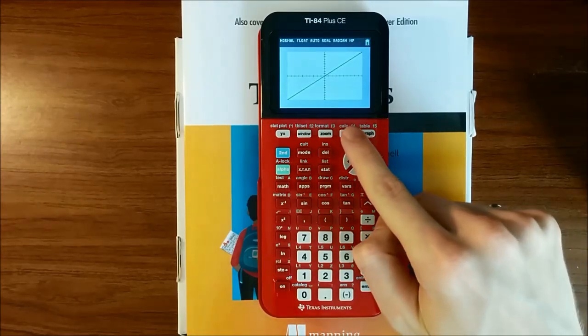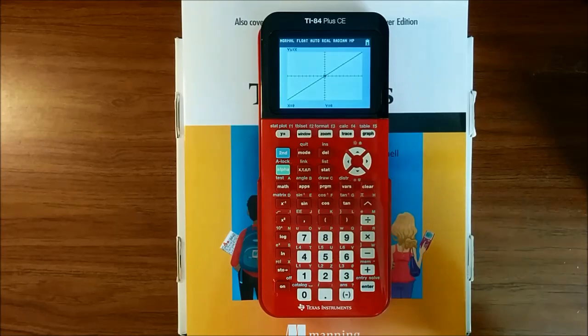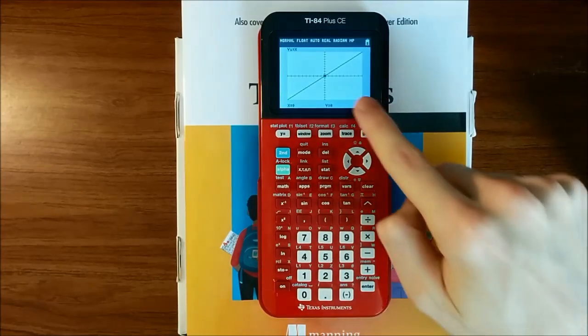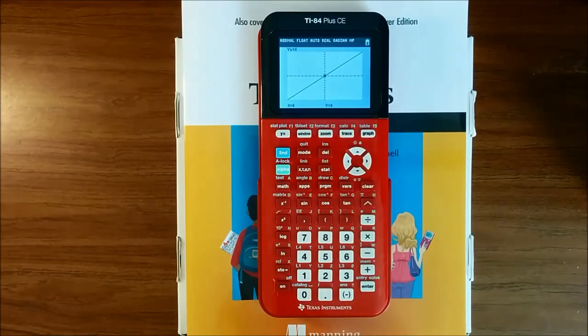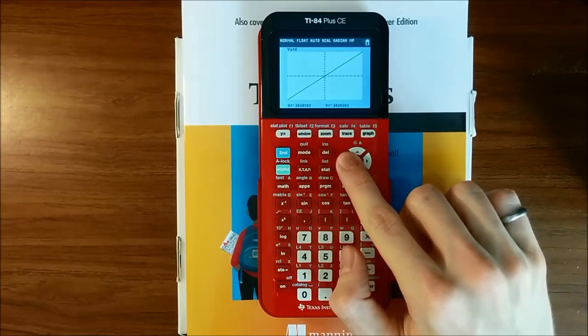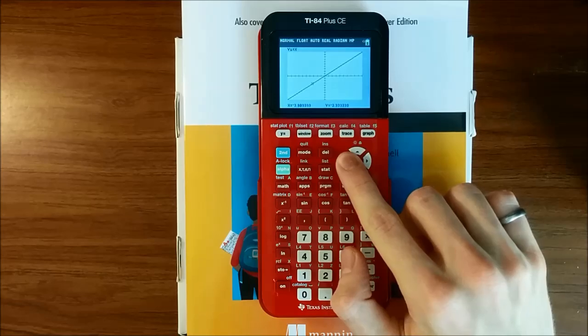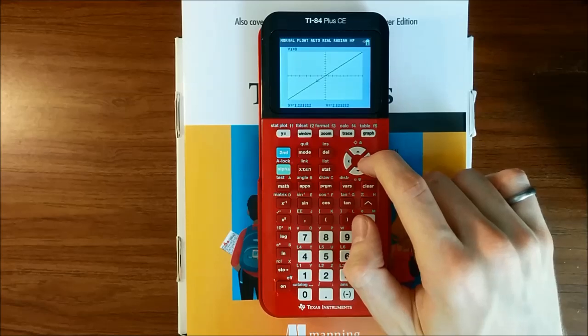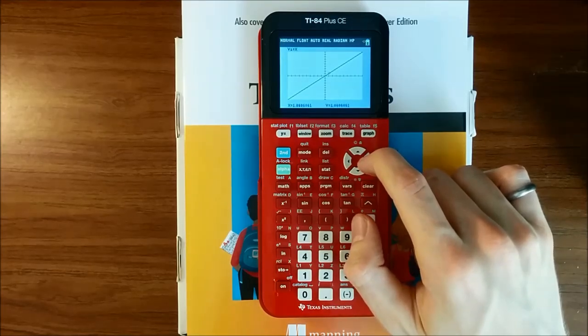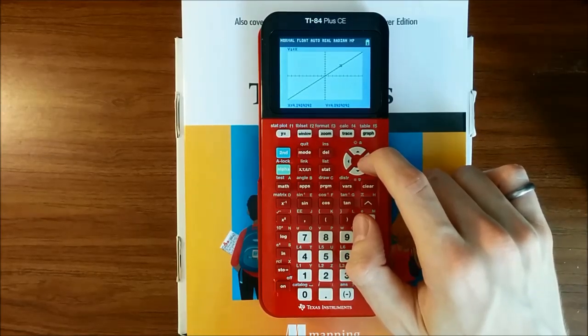We can make sure by examining the points on the graph by pressing trace. Trace shows a flashing cursor on the line, as well as the X and Y coordinates of the cursor at the bottom of the screen. If we press the left and right arrow keys, you can see that the cursor moves along the line, and the X and Y coordinates shown at the bottom of the screen are updated to show the current coordinates of the cursor.